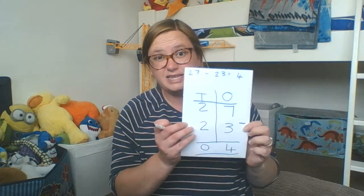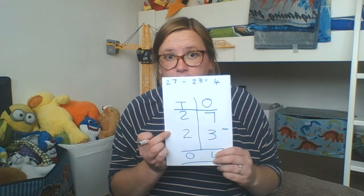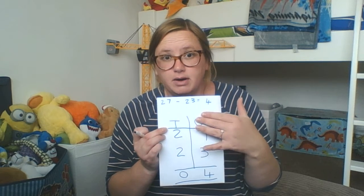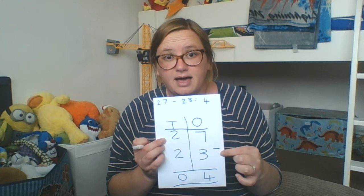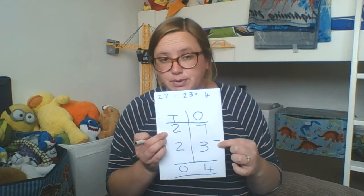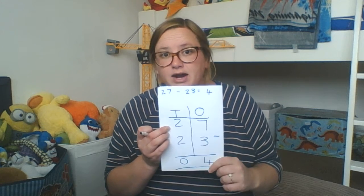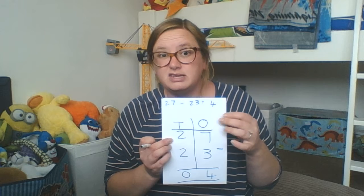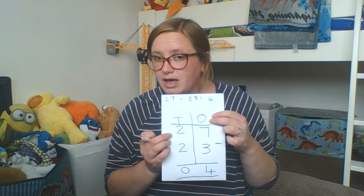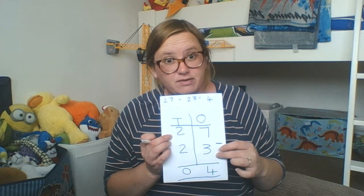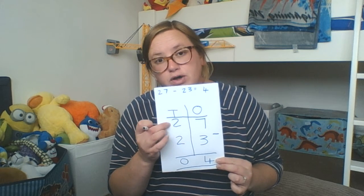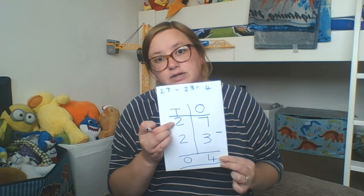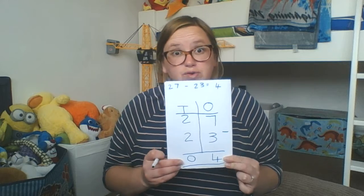One of your number sentences was 27 subtract 23, and so I lined up my columns, my tens and my ones, I put my numbers in, and my calculation is simple. I worked it out by looking at the ones column, starting in that column on the right, and saying what's 7 take away 3 — that gives me 4 — and then I go to the tens column, and it is 2 tens take away 2 tens, which equals 0 tens.